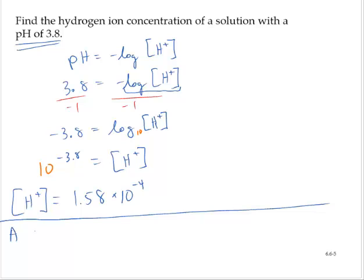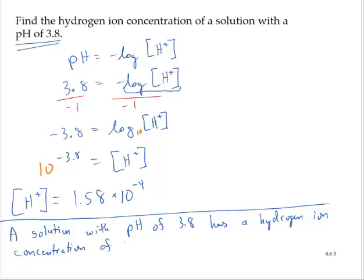So a solution with pH of 3.8 has a hydrogen ion concentration of 1.58 times 10 to the negative 4th. And we use a capital M for molarity.